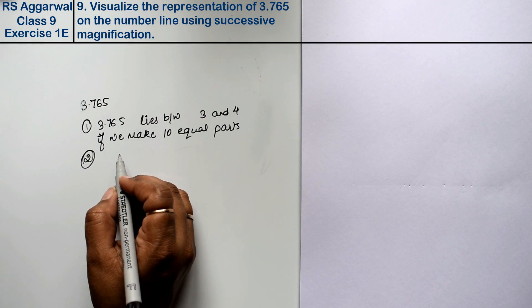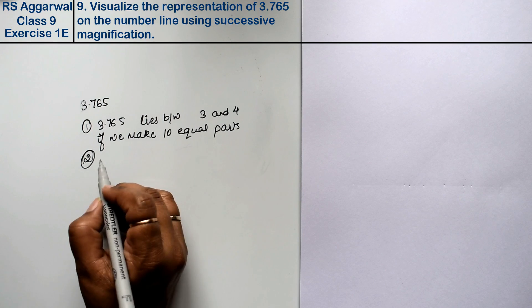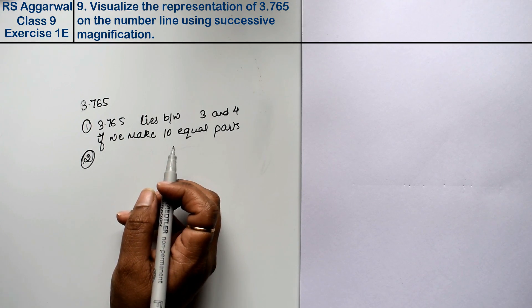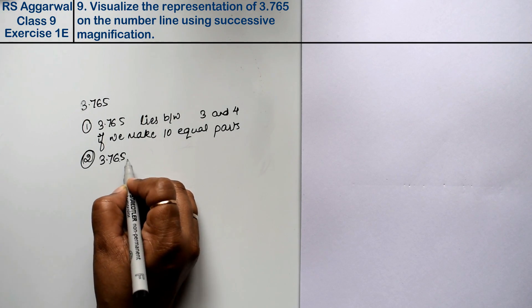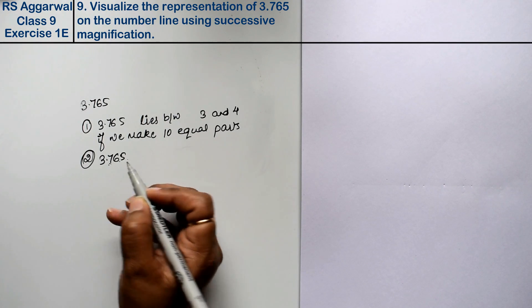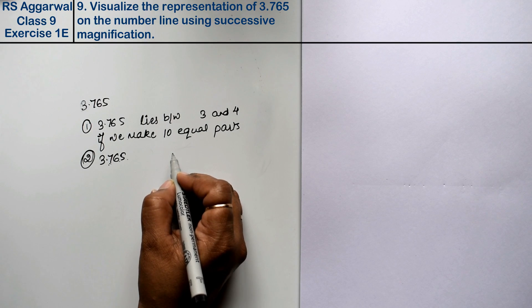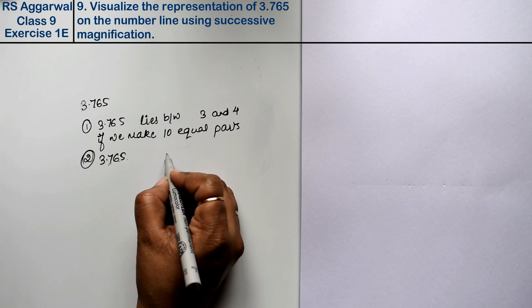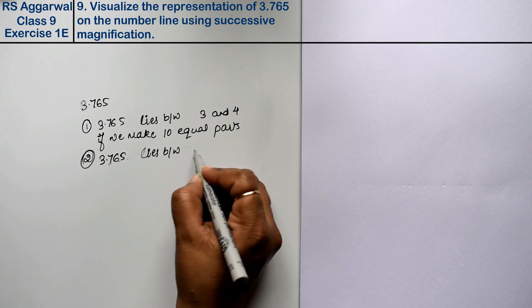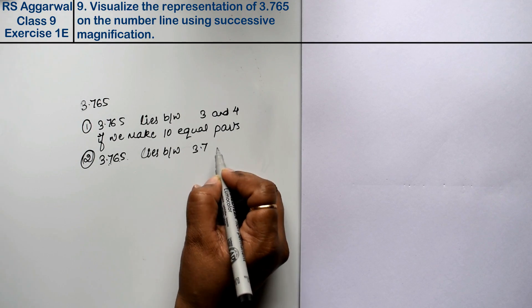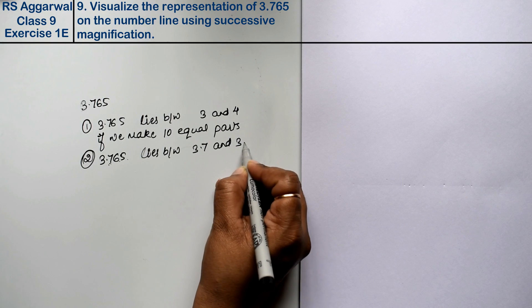If we look at the second point, then we will lie between 3 and 4 in the first part. So, 3.765 lies between 3.7 and 3.8.